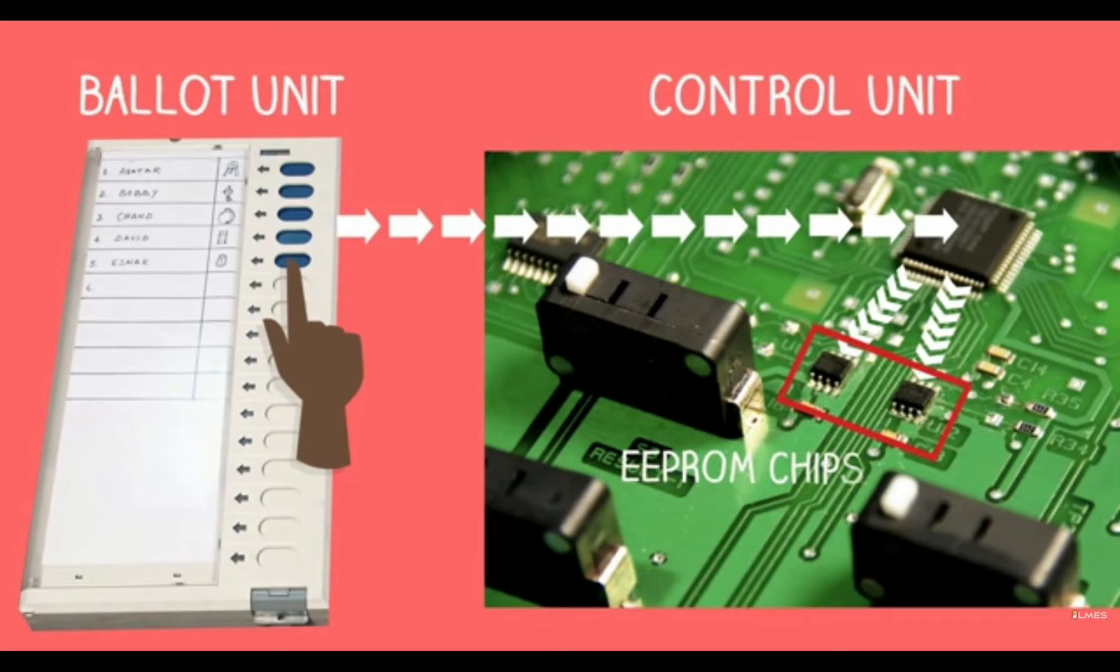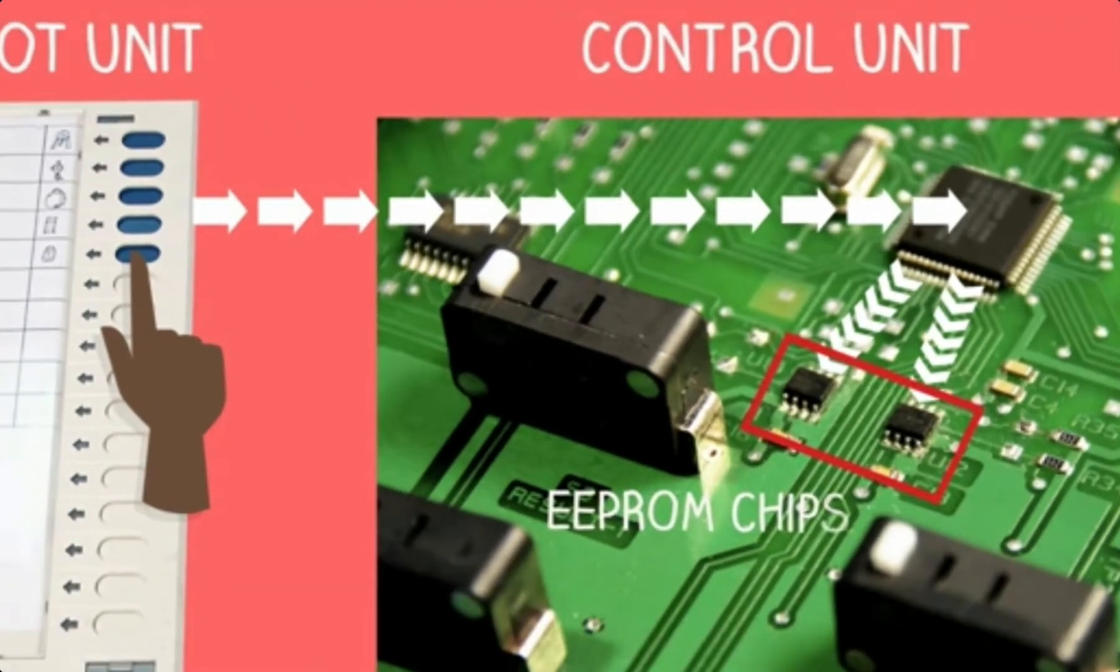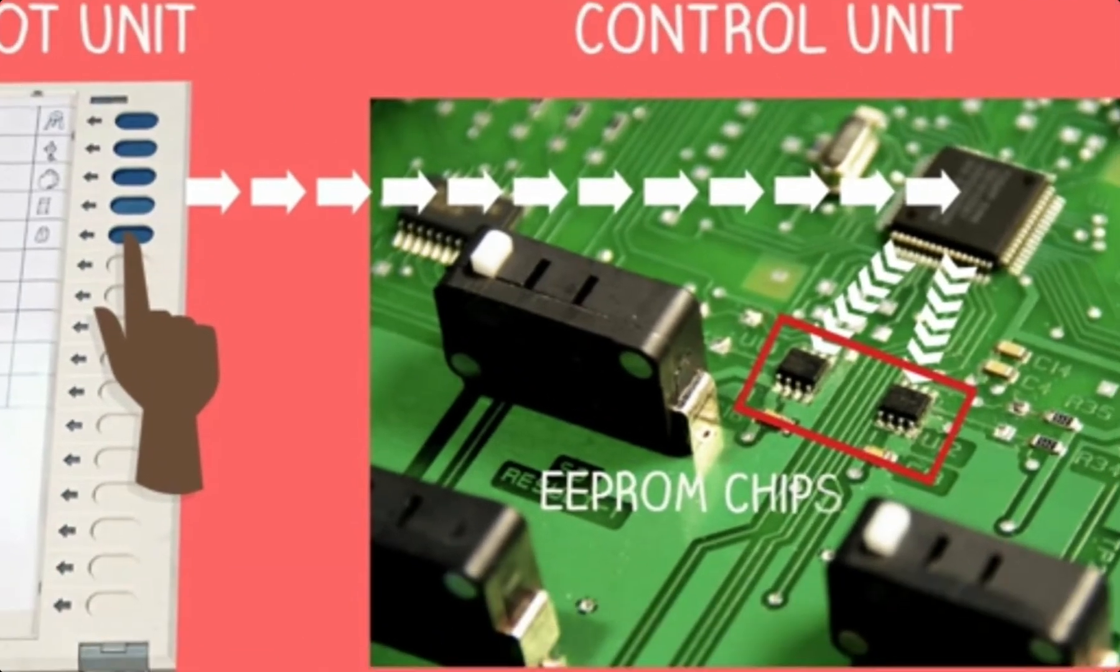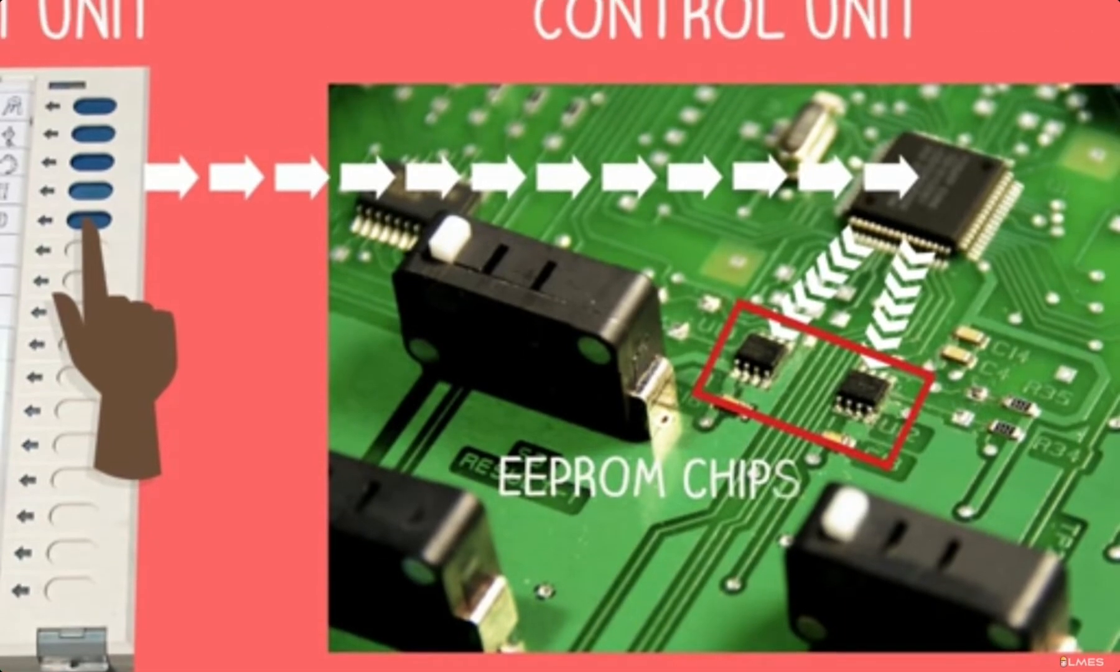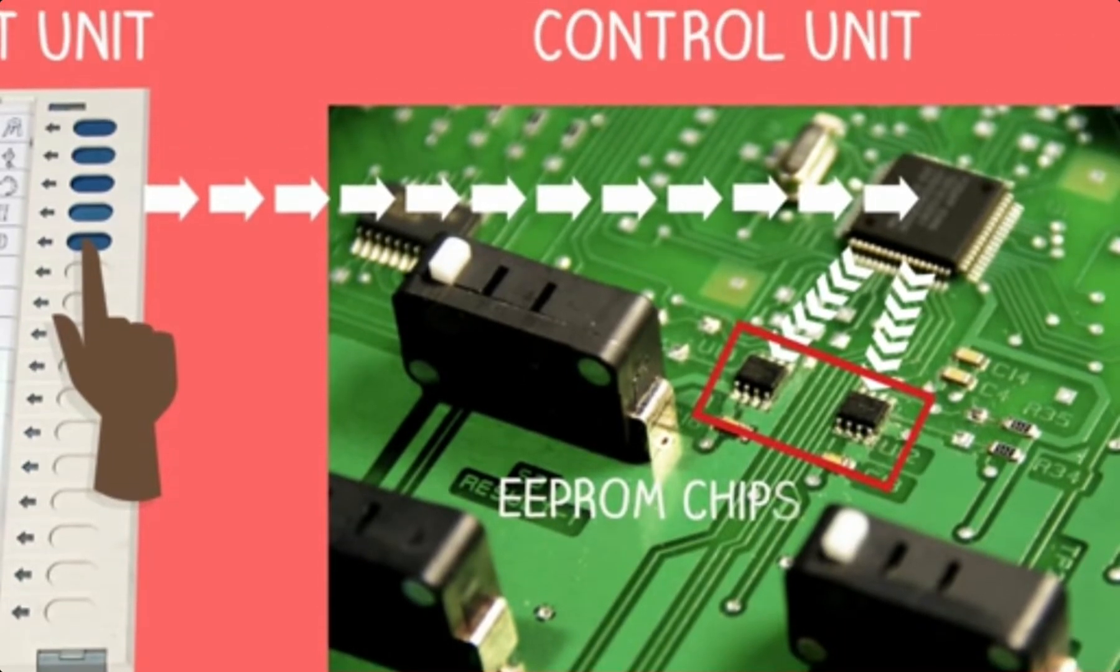Let me show you. You will find EEPROM chips - this is a normal chip and this is connected to the EEPROM chip. These EEPROM chips are the ones that collect your votes.